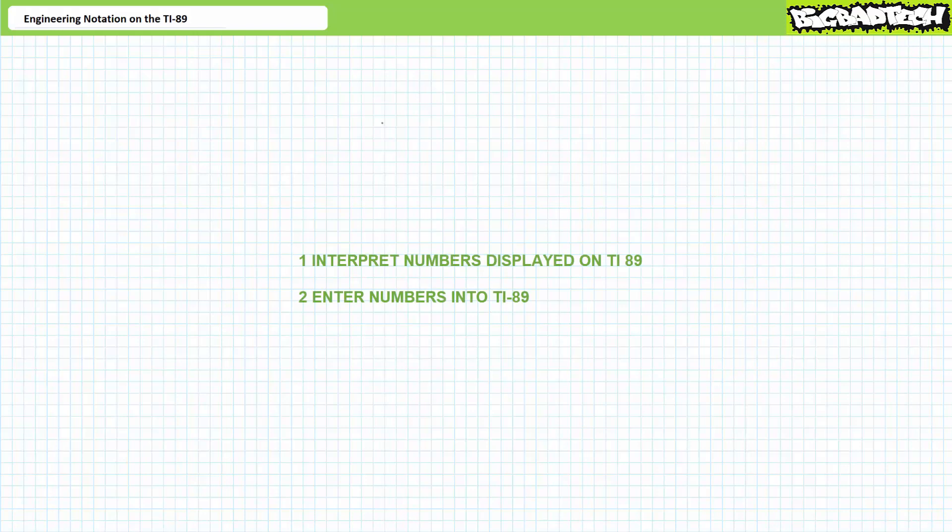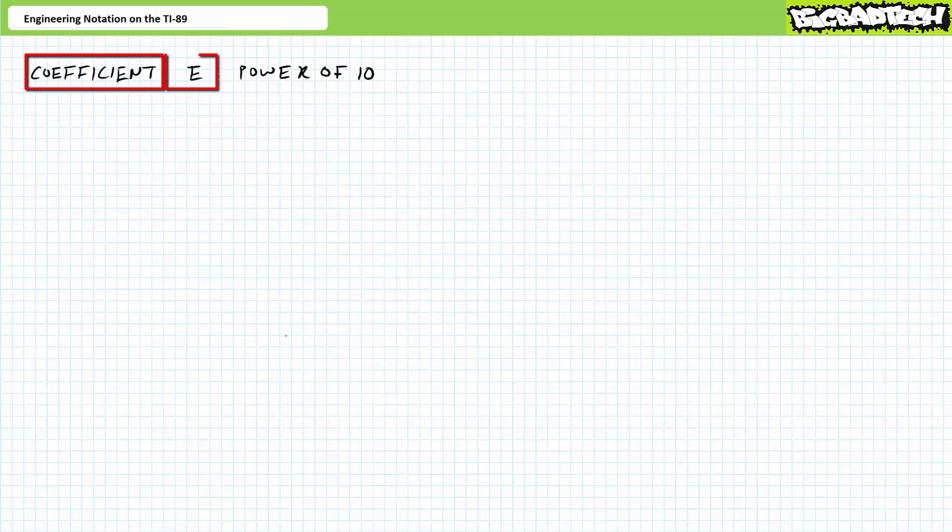We've got two tasks. One, learn to read a number displayed in engineering format in the TI-89. And two, learn to enter a number using engineering prefixes into the TI-89. Here's the key to interpreting numbers as displayed on the TI-89 in exponential format engineering. It's got three parts. The TI-89 displays a coefficient next to a capital E next to a power 10. This is the calculator's way of saying take the coefficient and multiply it by 10 raised to that power.